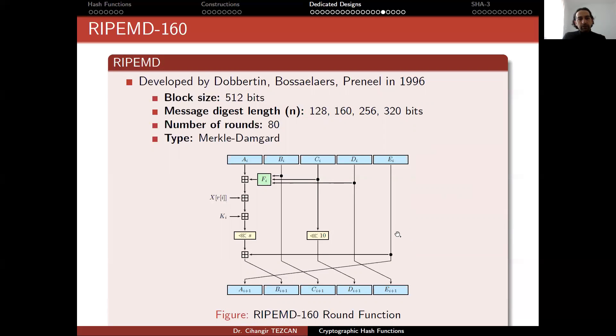Before moving to SHA-2, let's talk about RIPE-MD. It has many versions, but the 160 version is the one that you can replace SHA-1 with. Depending on the message digest length, you can have different RIPE-MD hash functions. It was developed by Dobbertin, Bosselaers, and Preneel in 1996. This is important because SHA-1 and SHA-2 was developed by NSA, but RIPE-MD was developed by academicians.